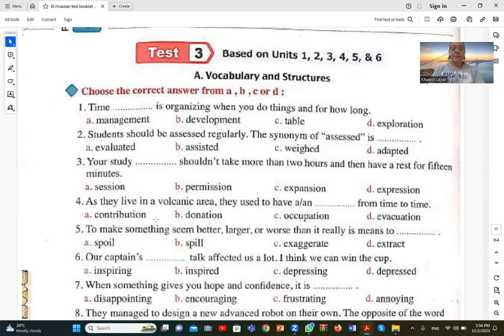Number five. To make something seem better, larger, or worse than it really is means to exaggerate. عشان تخلي الحاجة شكلها أفضل أو أكبر أو أسوأ من اللي هي عليه فعلاً. لما بتيجي تبالغ في الحاجة سواء جيدة أو سيئة this is exaggerate, C. من قام منها exaggeration للمبالغة. Exaggerate C is correct.